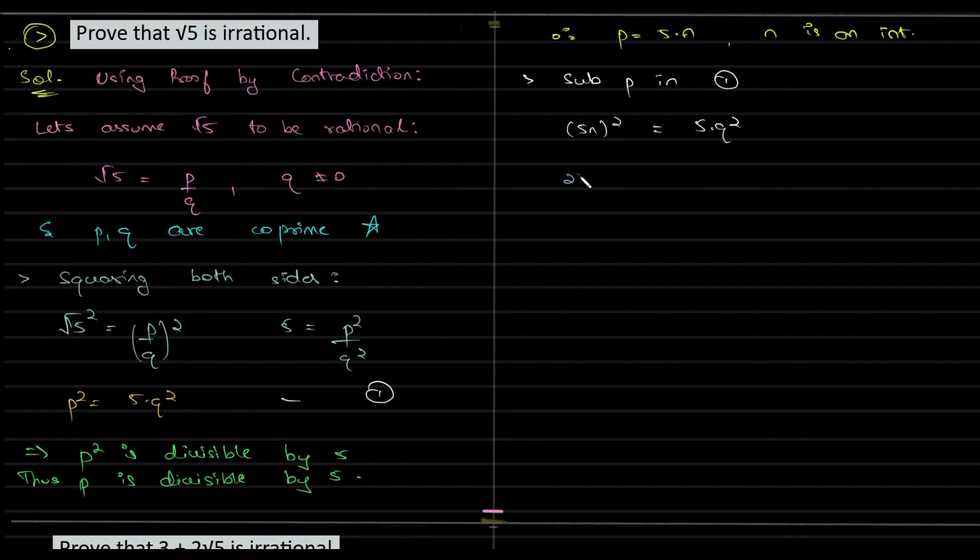So we have 25 n squared equals 5 into q squared. We will divide both sides by 5. We have 5 n squared equals q squared. If I rearrange this, q squared equals 5 n squared. Equation 1 and this is of the same pattern. Therefore, we can write q squared is divisible by 5, thus q is divisible by 5.